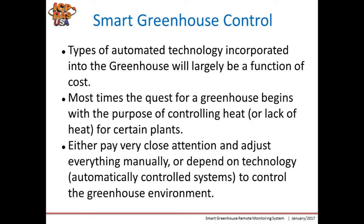The solution is greenhouse control automated technology. Most of us began the quest for a greenhouse for the purpose of controlling heat or lack of heat for certain plants. We may want to control heat but also water, light, and airflow. If we don't pay attention, plants may overheat in the greenhouse, so we either adjust everything by hand or depend on technology — that's why we need an automated control system.